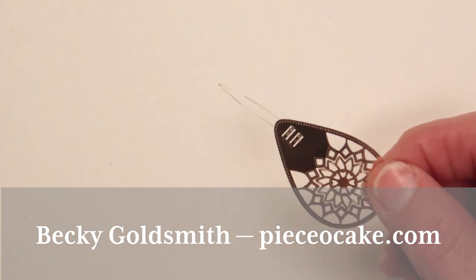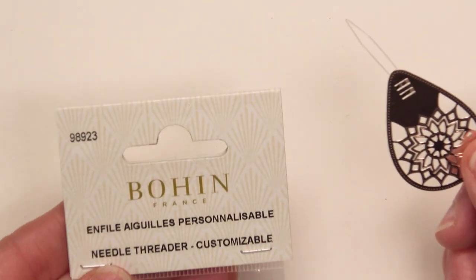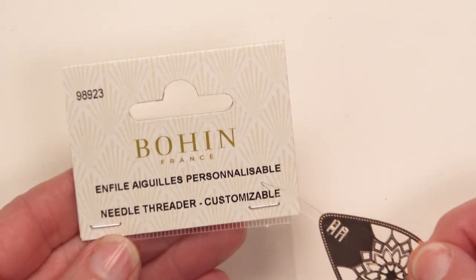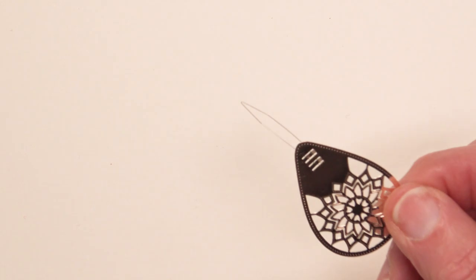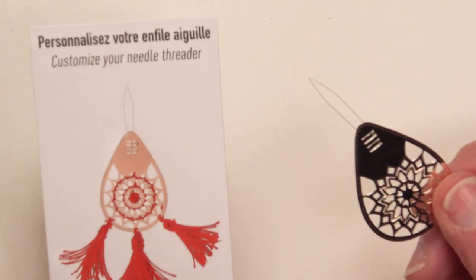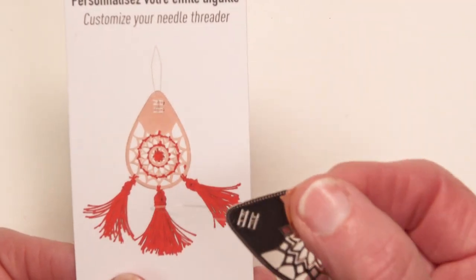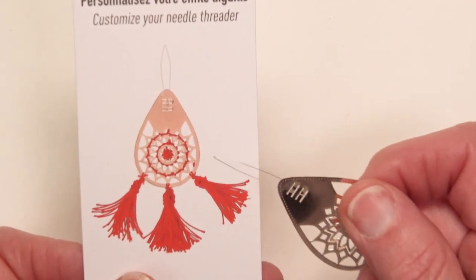Hello everyone, I'm Becky Goldsmith with Piece of Cake and I want to show you Bowen's needle threader. It's customizable because you can add threads and tassels and things to the handle part of the threader.